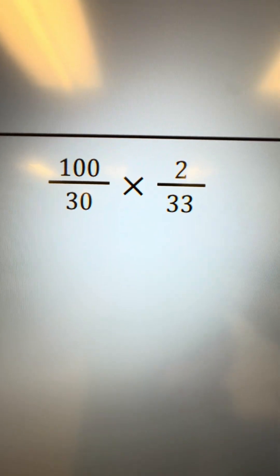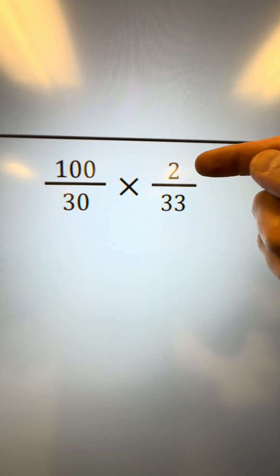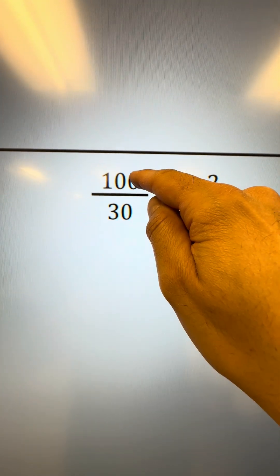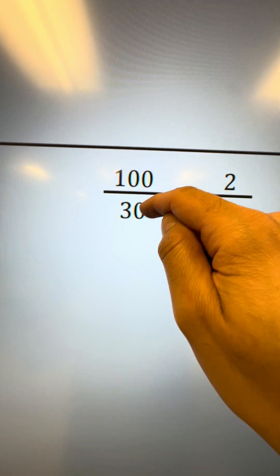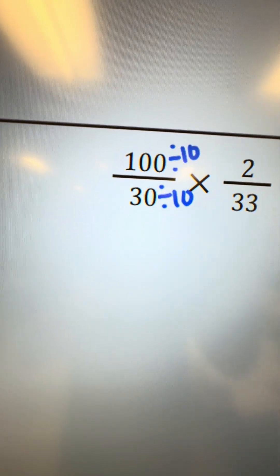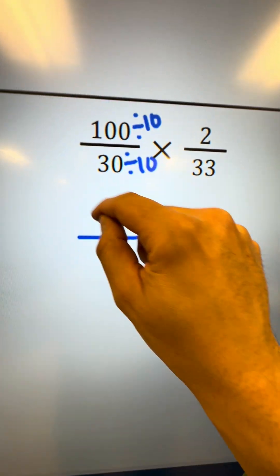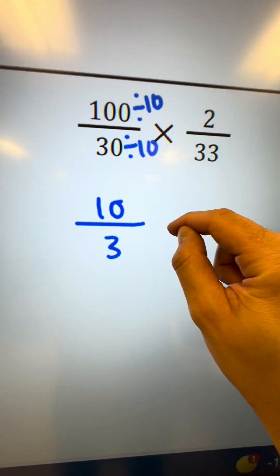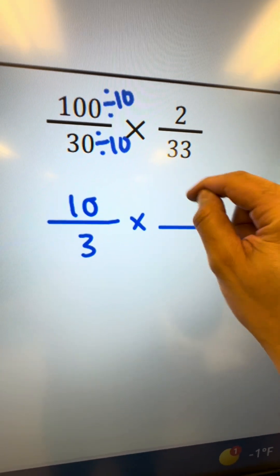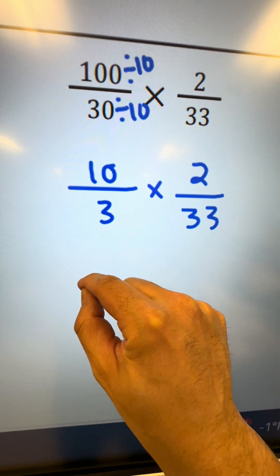Here's my next example. Looking at 2 and 33 — I can see 2 is prime, but both numbers in one fraction end in 0, so I know I can divide them each by 10. That gives me 10 here and 30 divided by 10 is 3. I'll keep the other fraction the same, then do the prime factorization in the next step.